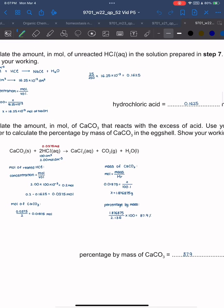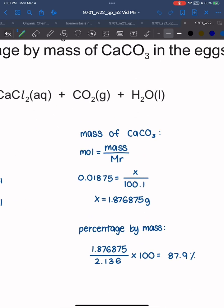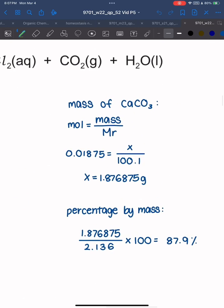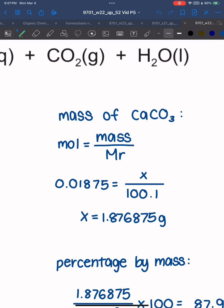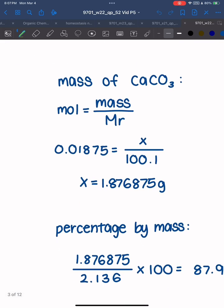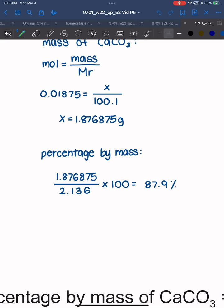They want percentage by mass, so use the moles of CaCO3 and the formula mole equals mass over Mr. The Mr of CaCO3 from the periodic table is 100.1. Multiply the number of moles 0.01875 times 100.1 to get mass of 1.876875 grams. For percentage by mass: 1.876875 over 2.136 times 100 equals 87.9%.